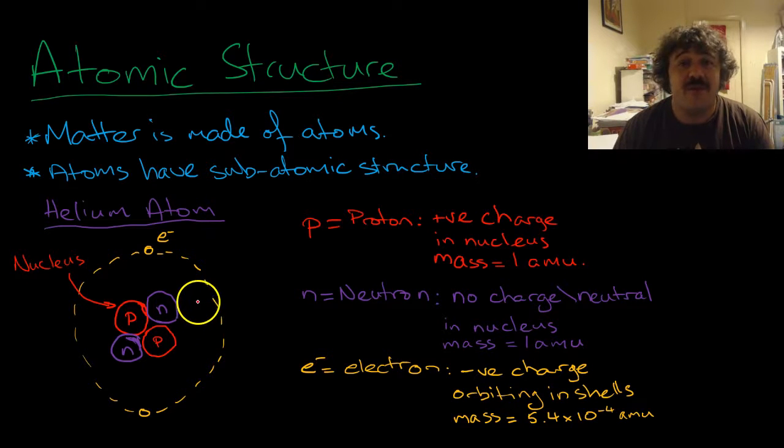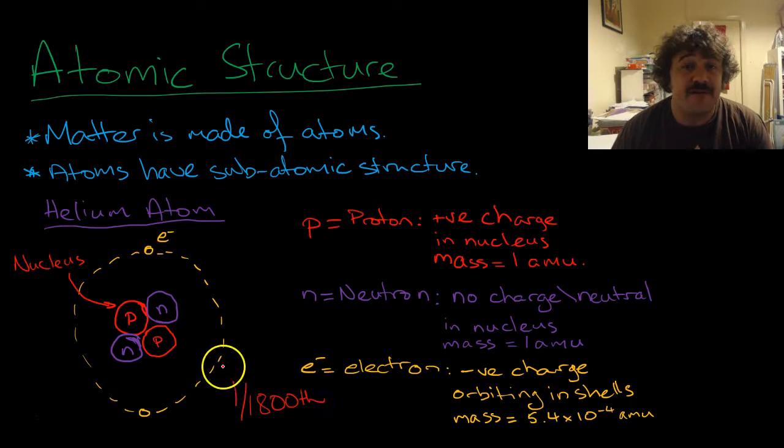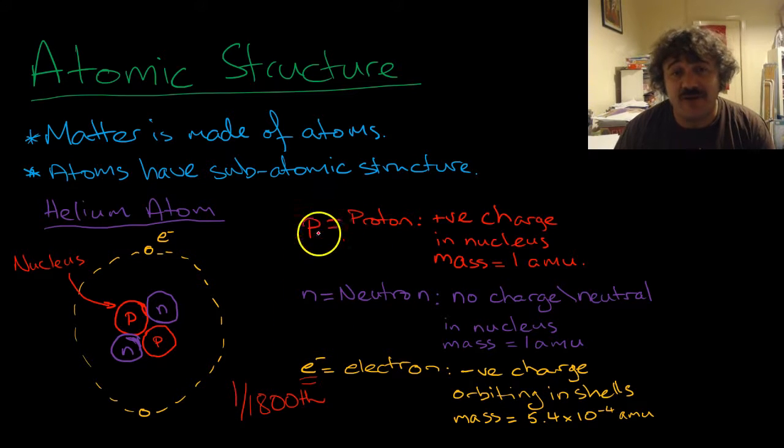And then we have the electron, which is very, very, very tiny. It is roughly one eighteen hundredths of a proton or a neutron. So we've got this electron here. This is the symbol for electron. If you see that, it means electron, and it has a negative charge. So it is opposite to the proton. It is in charge opposite to a proton and equal to a proton. In mass, it is very, very small. It is 5.4 times 10 to the minus 4, or one eighteen hundredth, of an atomic mass unit. And it doesn't live in the nucleus. It orbits in shells around at a very, very high speed.